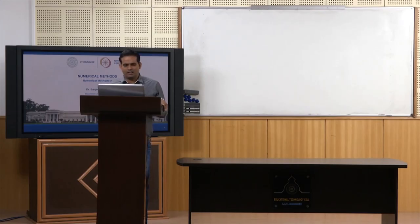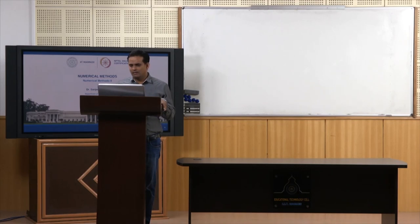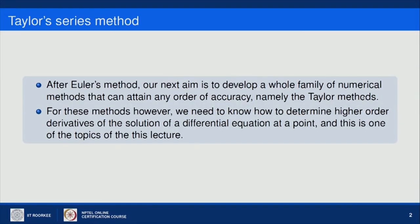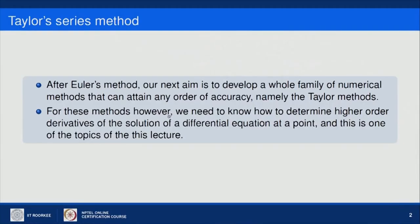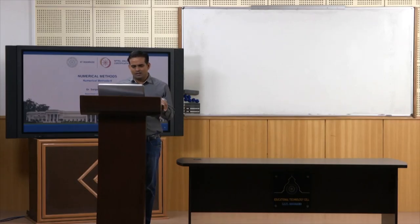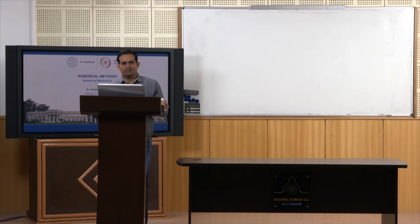In this lecture our aim is to develop a whole family of numerical methods that can attain any order of accuracy, unlike Euler's method where we have accuracy of order h. We will cover Taylor's method, specifically the quadratic Taylor method, and then how we can generalize Taylor method to any order. In Taylor's method we need to know how to determine higher order derivatives of the solution of a differential equation at a point.